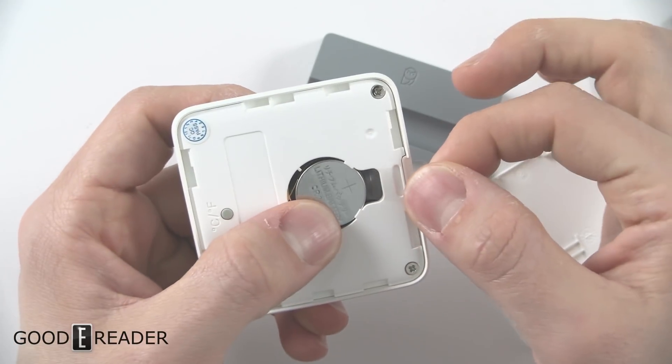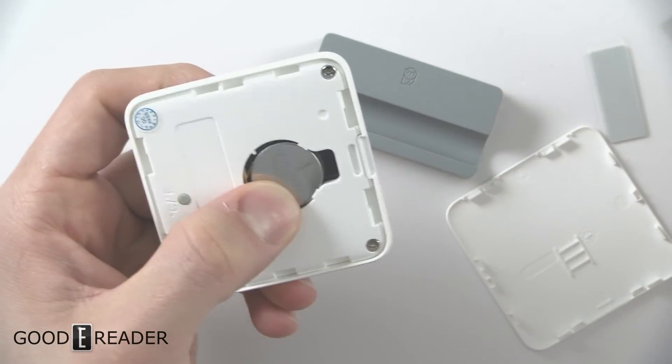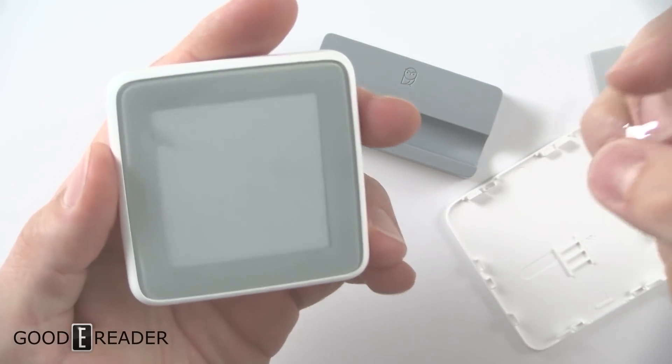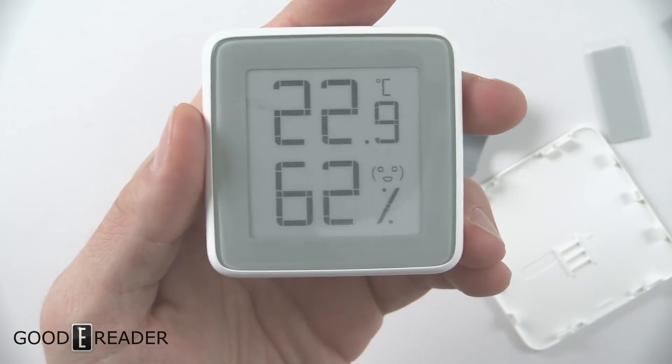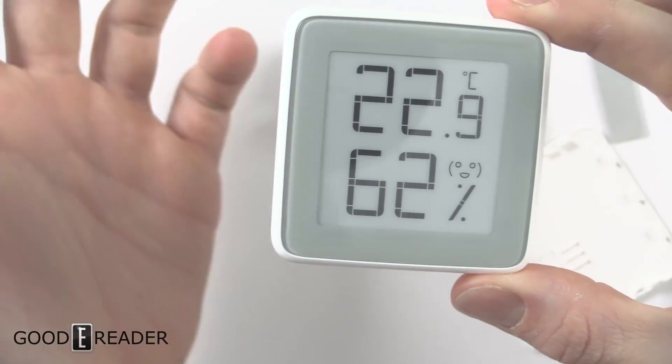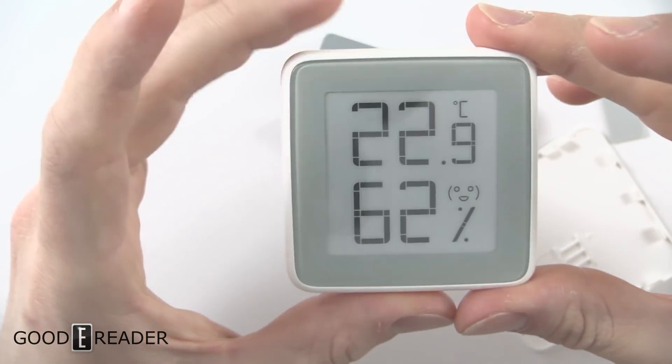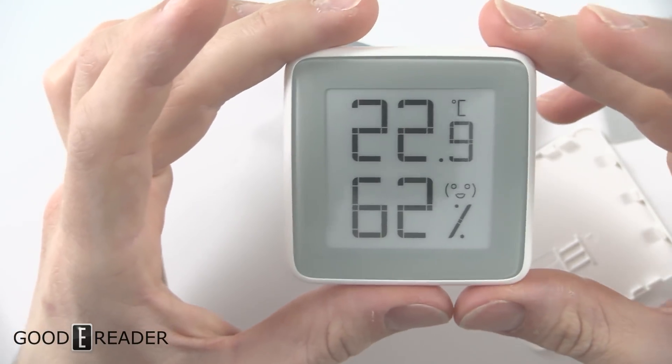You pull this tab and that actually separates the battery from the electronics. So there you have the current temperature in our studio here: 22.9 degrees, 62% humidity.